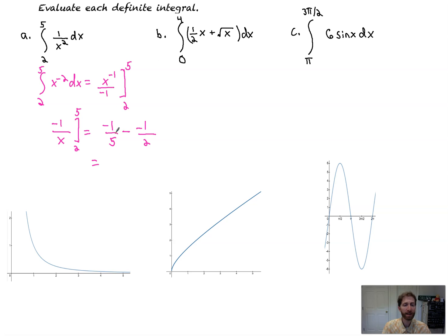This simplifies to negative one-fifth plus one-half. What's negative one-fifth plus one-half? That's equal to negative two-tenths plus five-tenths, or three-tenths. That represents the area from two to five, all of that. That's the exact area.